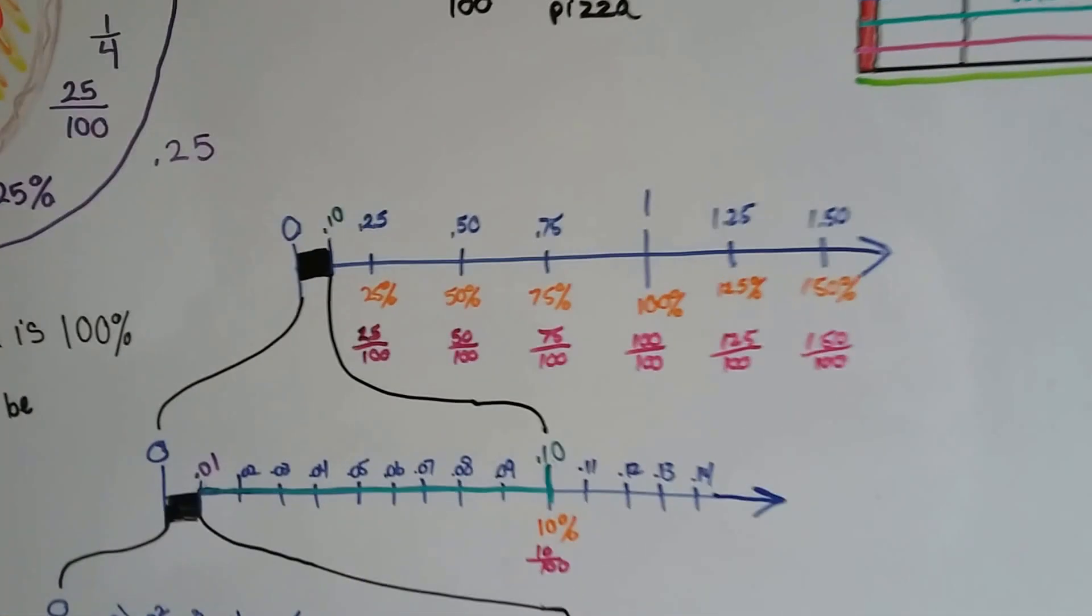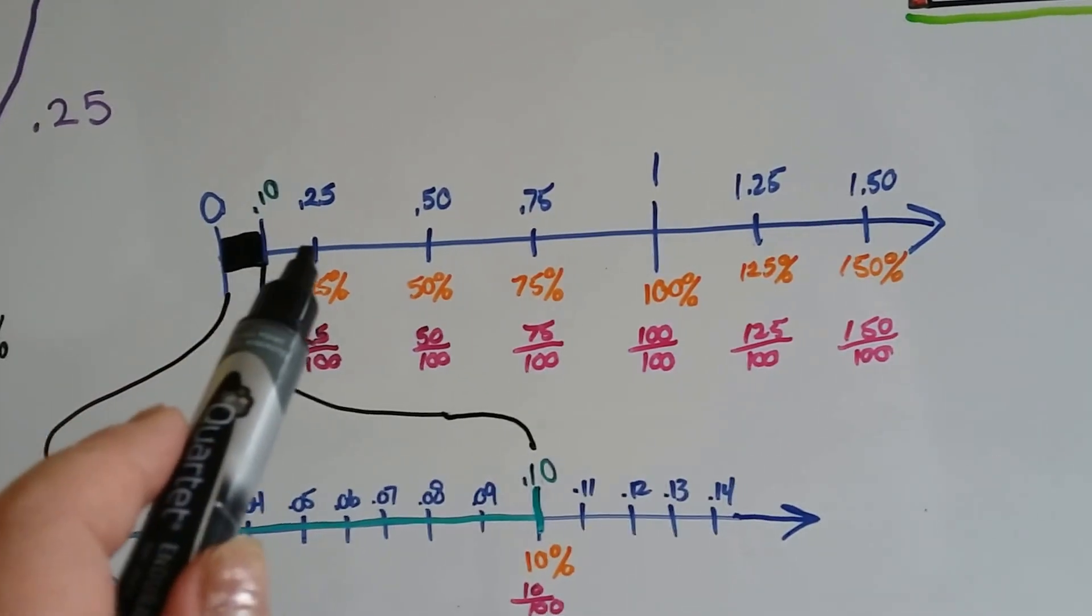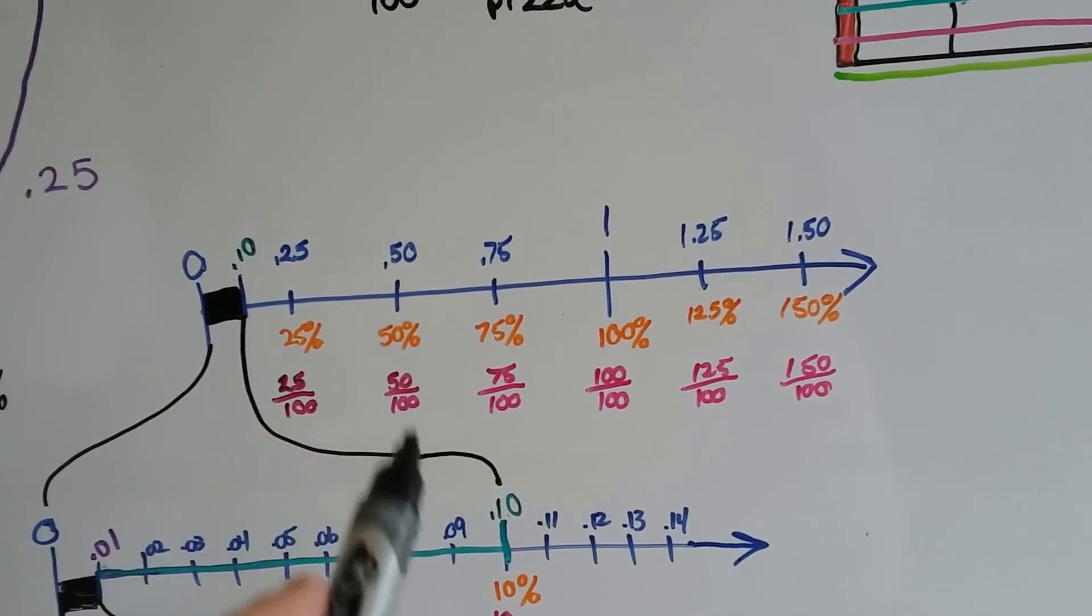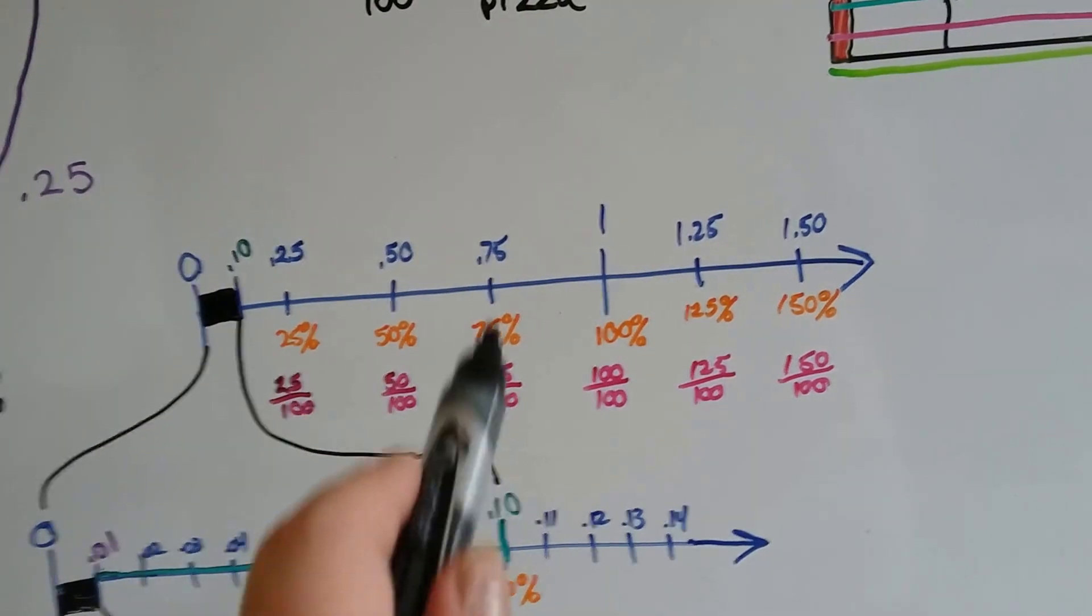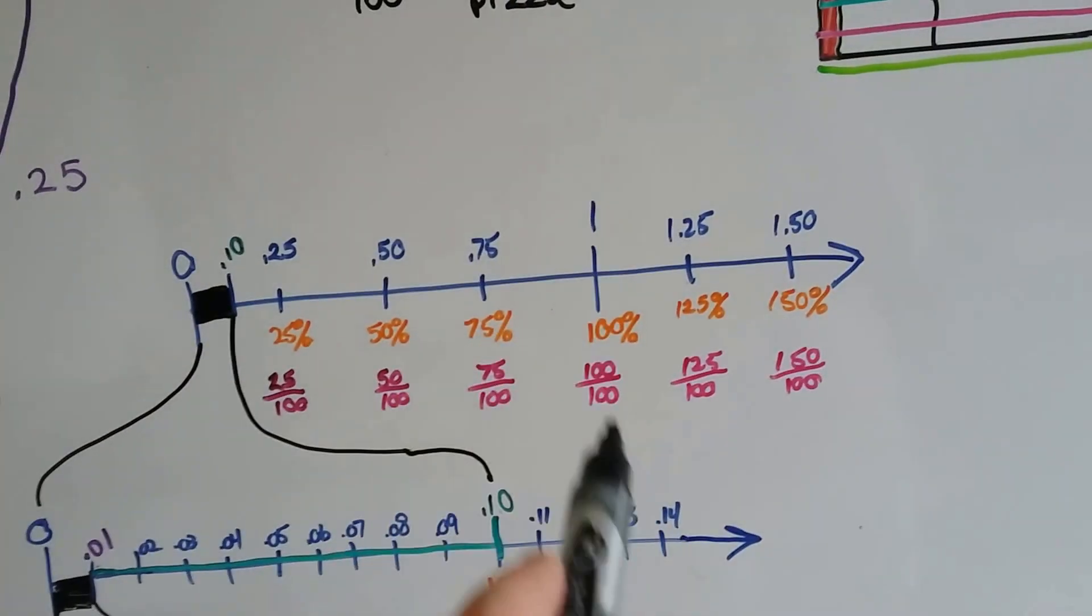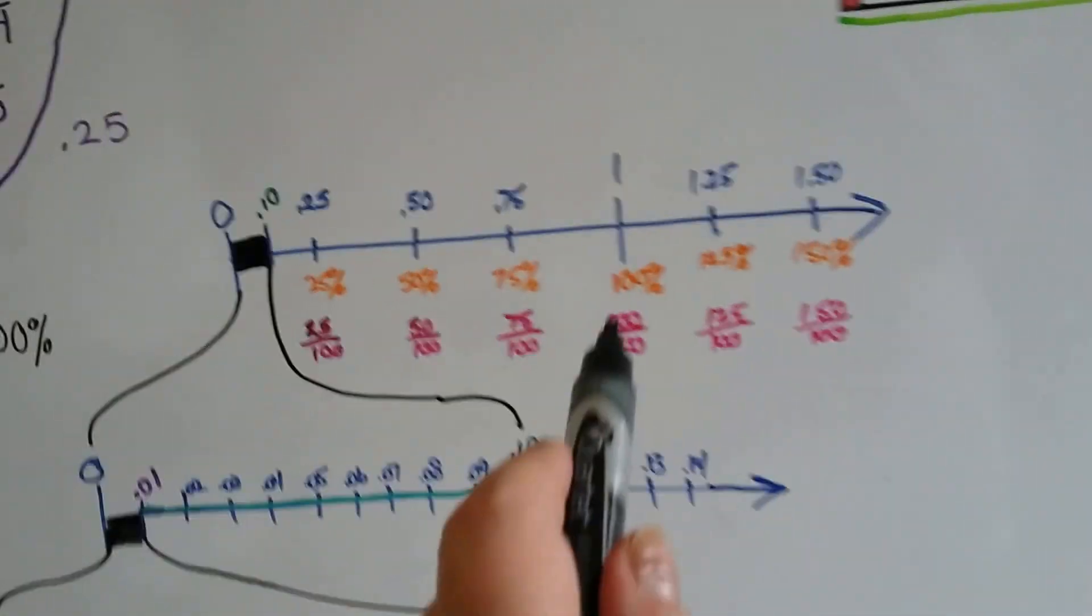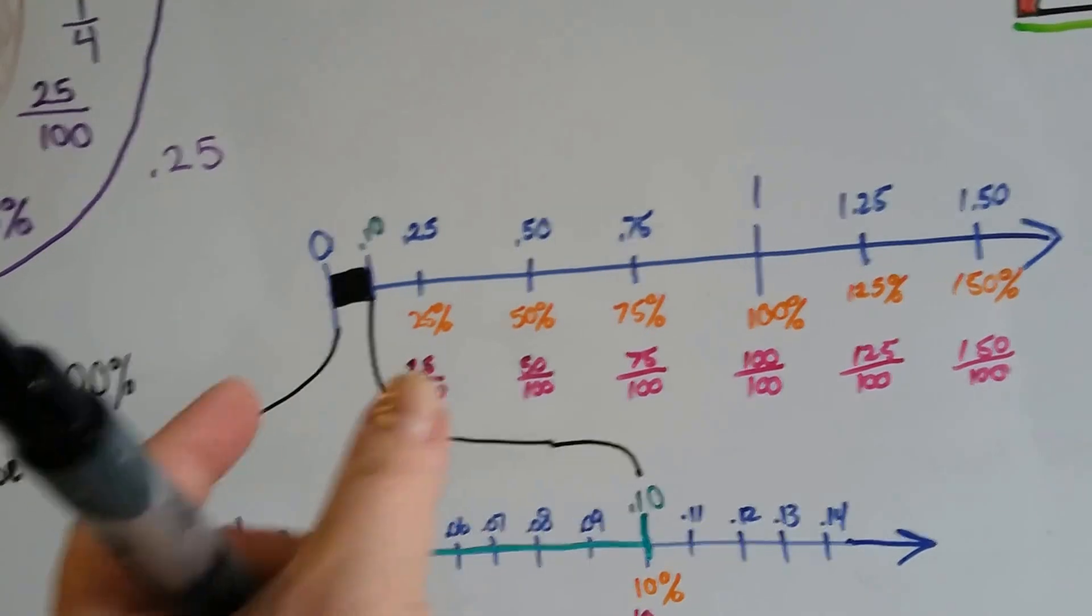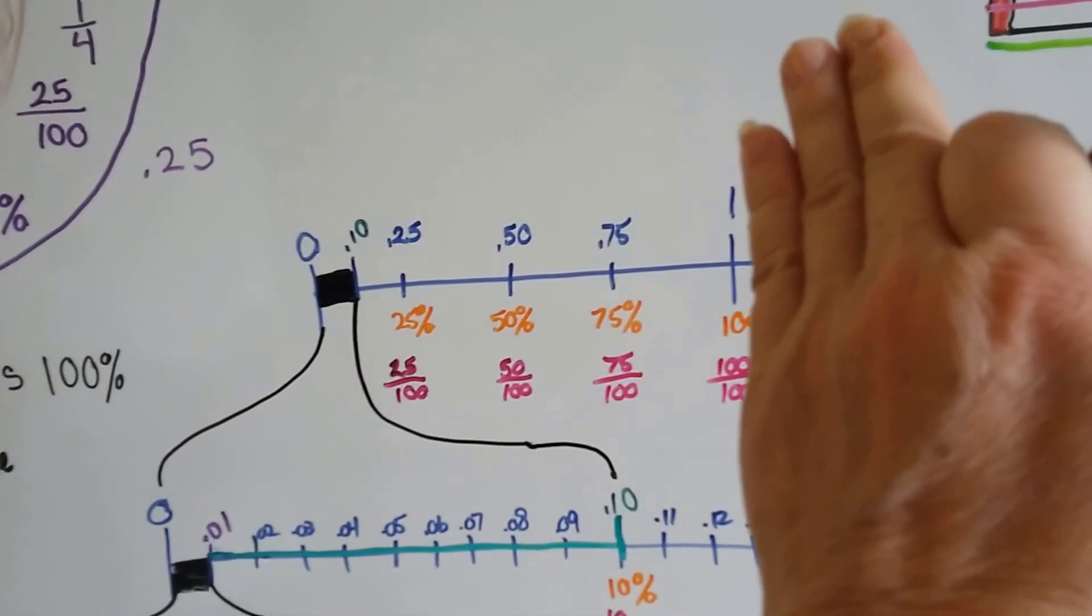So here's what it looks like on a number line. If we've got one-fourth, 25 percent, a half, which is 50 percent, and three-fourths, which is 0.75, 75 hundredths. And here's one whole right here. And then two would be here and three would be here. So this is just the number one. So that would be half the pizza in between here. So this is just up to number one.